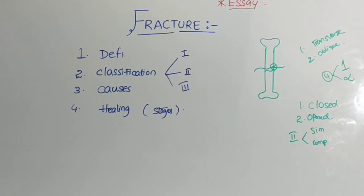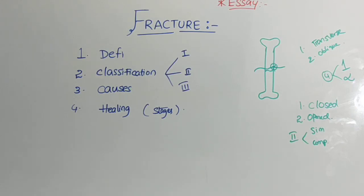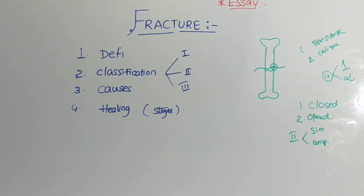Next, move on to causes. For every disease or deformity there will be some causes. Firstly, trauma — any accident may cause a fracture. Next, pathological fractures — any diseases may cause fractures, such as rickets, osteogenesis imperfecta, osteoporosis, hyperparathyroidism, and osteomalacia. These were some of the causes which lead to fracture.